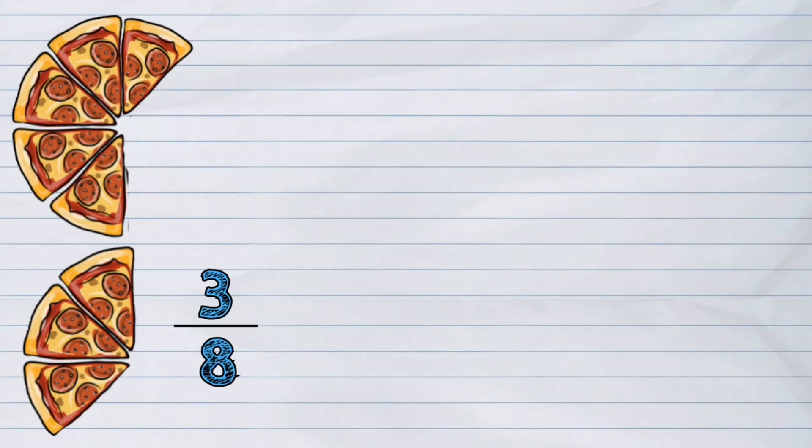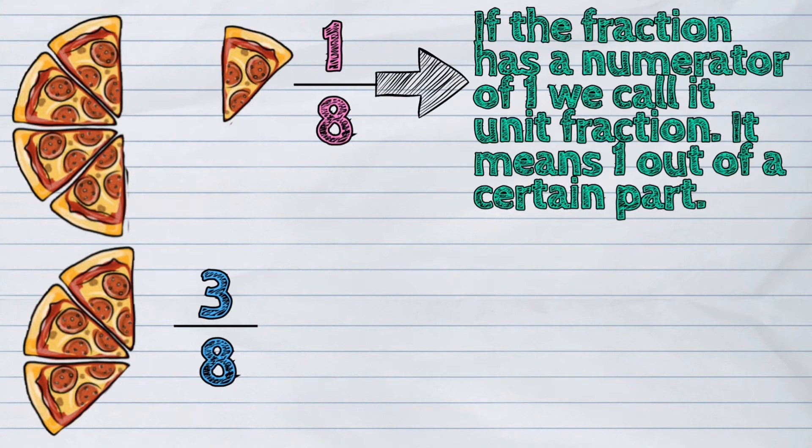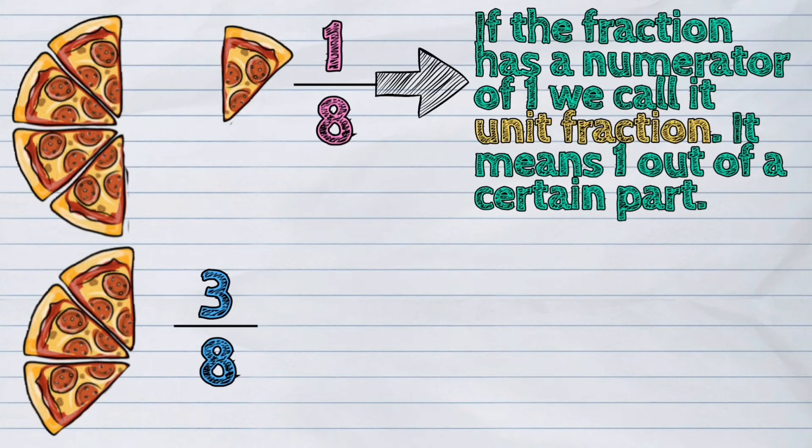Now, if your sister ate one slice from this pizza, it means that she had one-eighth of it. If the fraction has a numerator of one, we call it unit fraction. It means one out of a certain part.